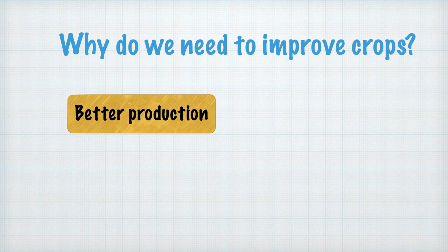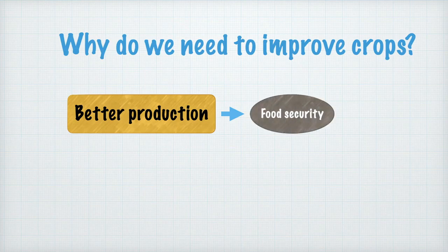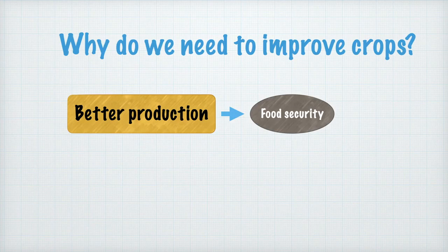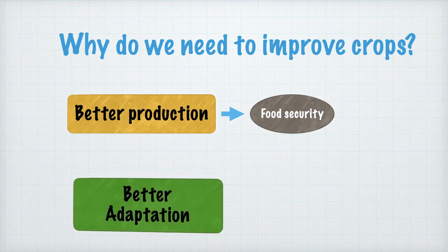Through genetic engineering and biotechnology, we can improve our existing agricultural system to be more productive by improving crops for better production and productivity, securing food for future generations. There are also many people under the poverty line, so to maintain food security and production levels for both current and future populations, we must improve our crops.